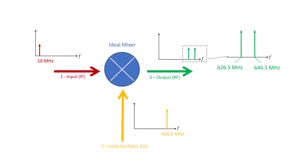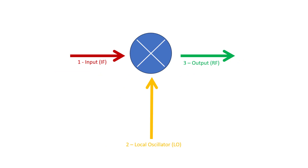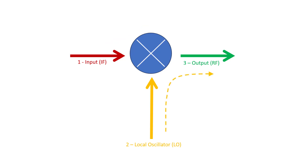Practical mixers are very non-linear devices, so many additional frequency components will be produced that must be handled appropriately, but these are beyond the scope of this video. However, there are a couple of unwanted spectral components that are relatively easy to understand. Ideally we would have perfect isolation between these three ports, but in practice some of the IF power will directly leak through to the output port, and some of the LO power will also leak to the output port. We will see how we can use the latter very shortly.